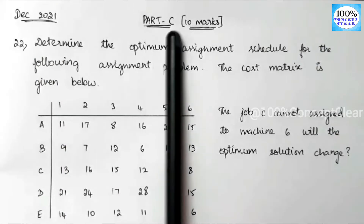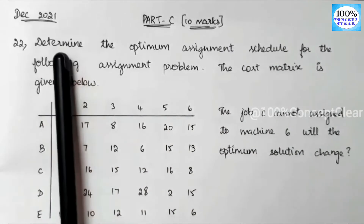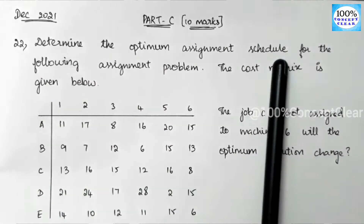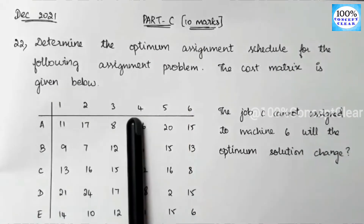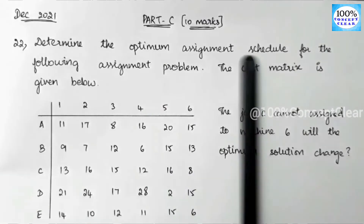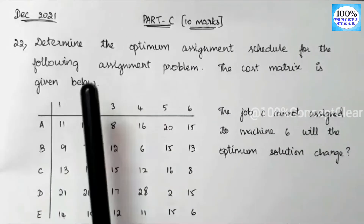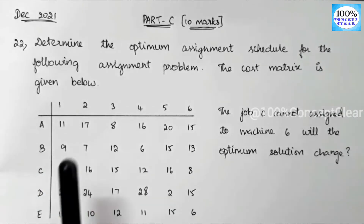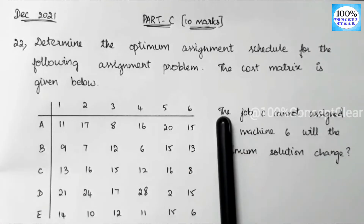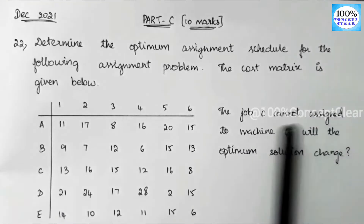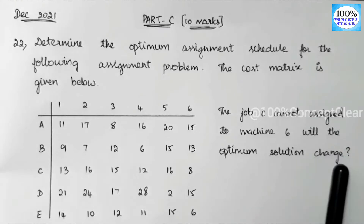We will solve Part C, or 10 marks — question number 20. This is the optimum assignment schedule for the following assignment problem. In this assignment problem, we will solve the optimum assignment schedule. The cost matrix is given below. The job C cannot be assigned to machine 6. Will the optimum solution change?